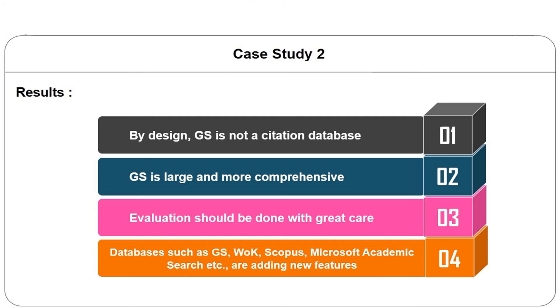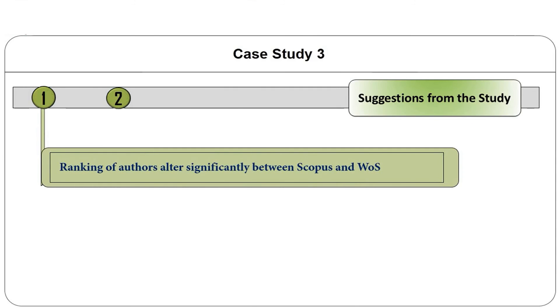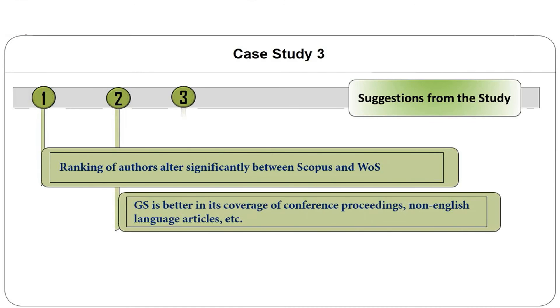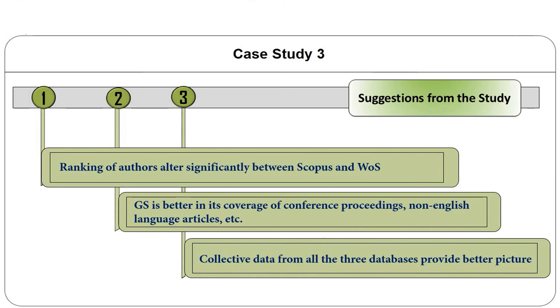Another study by Meho and Yang examined the impact of data sources on citation counts and ranking of LIS faculty, comparing Web of Science versus Scopus and Google Scholar. The study found that Scopus and Web of Science could significantly alter the ranking of authors. Google Scholar stands out in its coverage of conference proceedings and international non-English language journals, and indexes a wide variety of document types that may be of significant value to researchers.